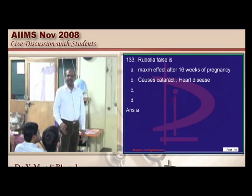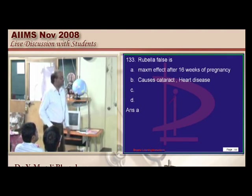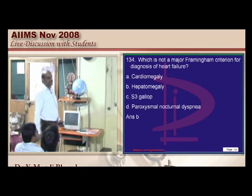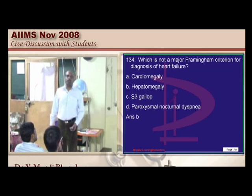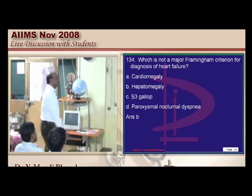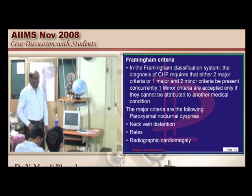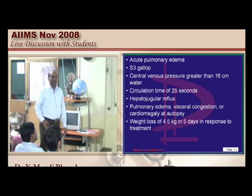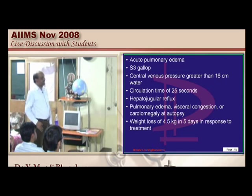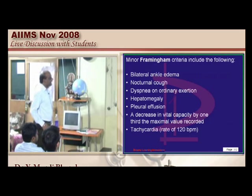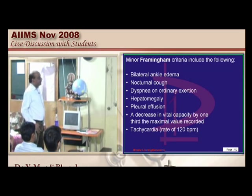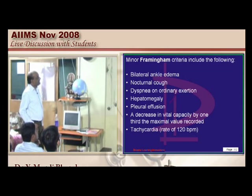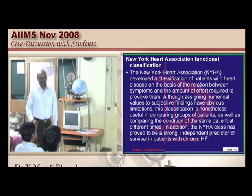Rubella is more severe when it infects the baby in the first trimester, not the second trimester. The Framingham major criteria for heart failure include paroxysmal nocturnal dyspnea, neck vein distension, pulmonary edema, S3 gallop, CVP more than 16, hepatojugular reflex, and weight loss of 4.5 kg in 5 days. Minor criteria include bilateral ankle edema, nocturnal cough, hepatomegaly, pleural effusion, and tachycardia. Hepatomegaly falls in the minor, not major, Framingham criteria.